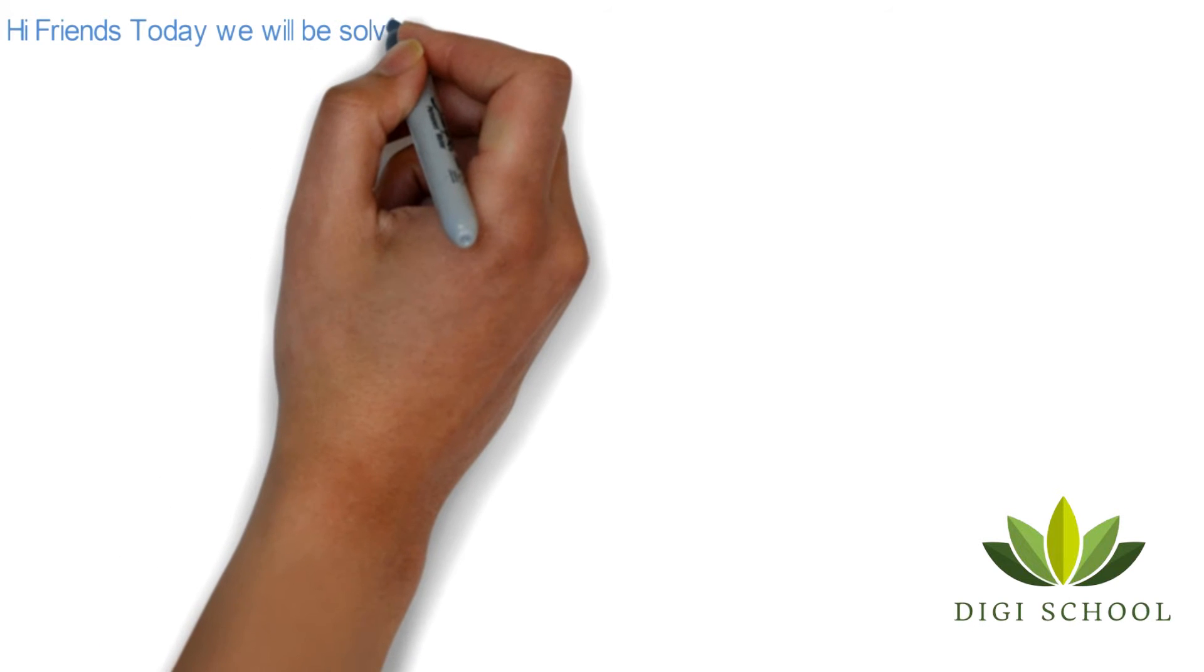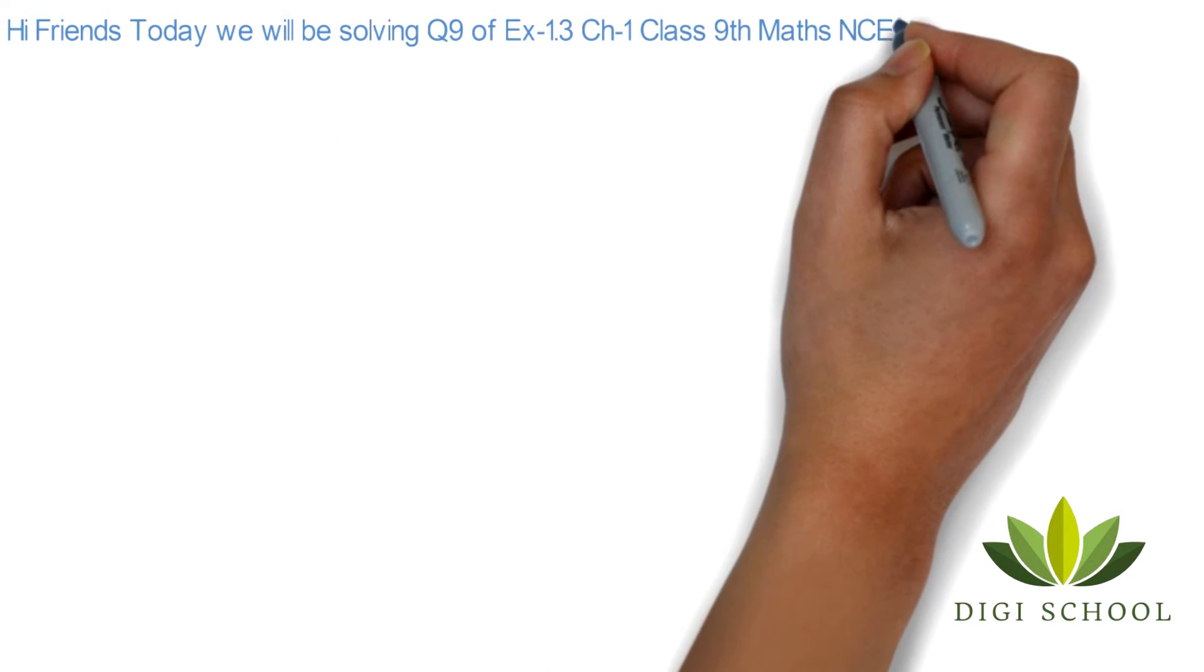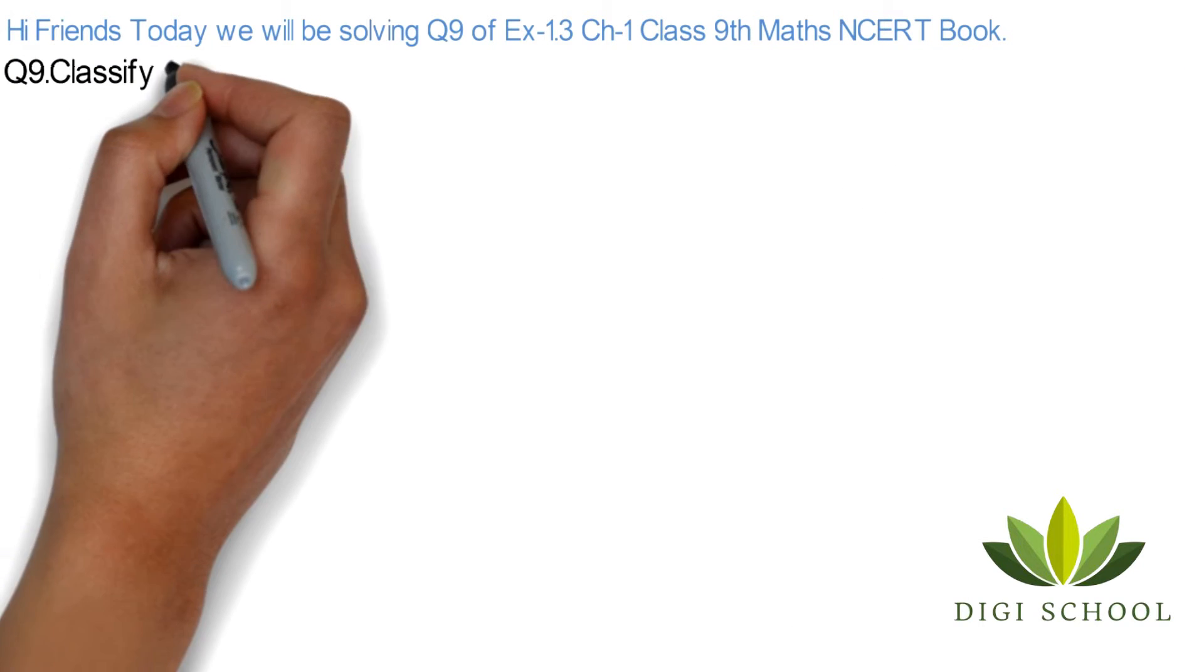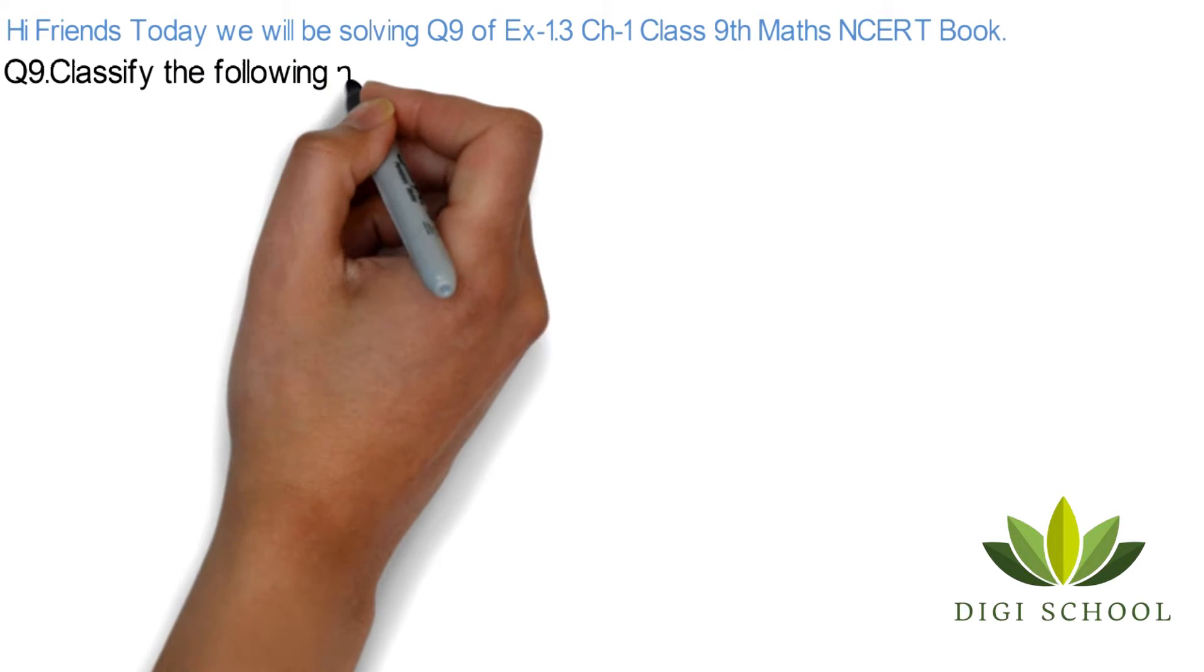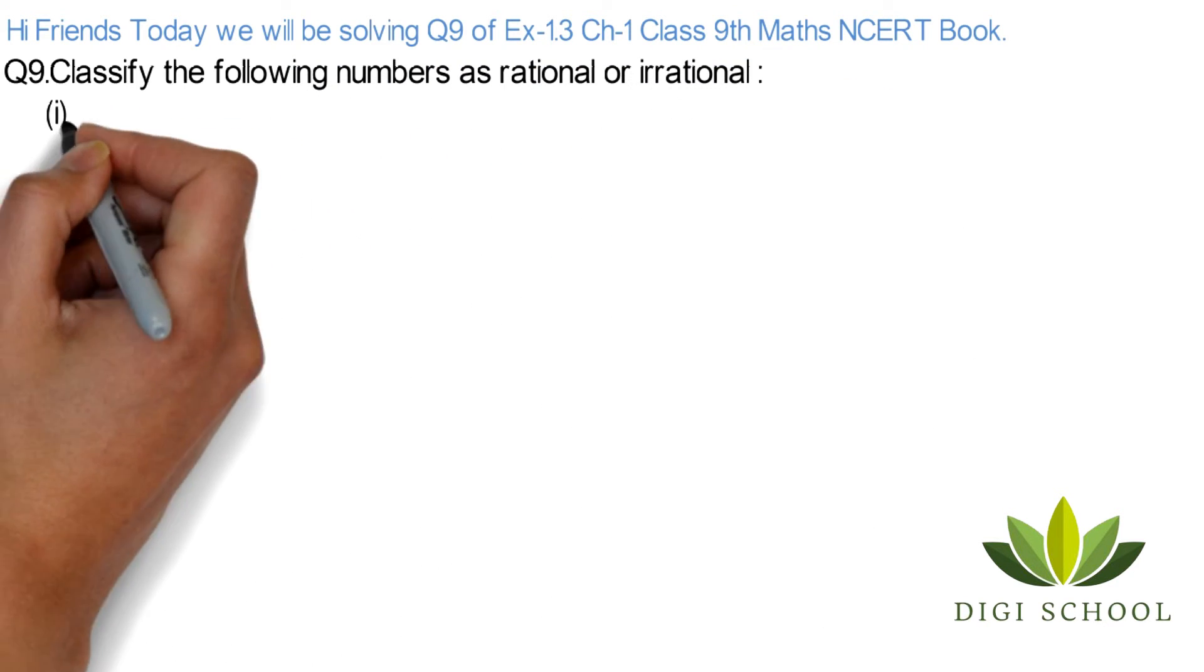Hi friends, today we will be solving Question 9 of Exercise 1.3, Chapter 1, Class 9 Maths NCERT Book. Question 9: classify the following numbers as rational or irrational.